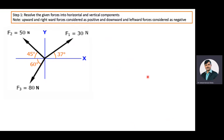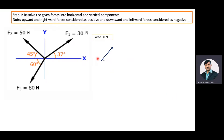First, we will resolve the 30 Newton force. This 30 Newton force F1 is making an angle of 37 degrees with the x-axis. So its horizontal component becomes 30 cos 37 degrees, and its vertical component becomes 30 sin 37 degrees.